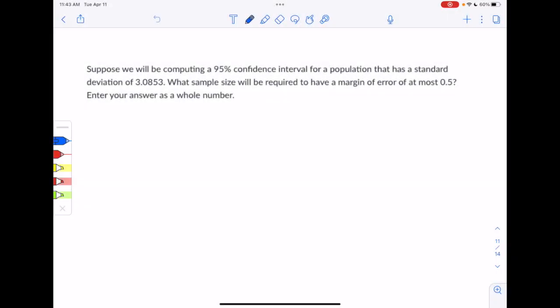Hello, Matt Davis here with more homework quiz help. This one is from section 8.4. Suppose we will be computing a 95% confidence interval for a population that has a standard deviation of 3.0853. What sample size will be required to have a margin of error of at most 0.5? Enter your answer as a whole number.